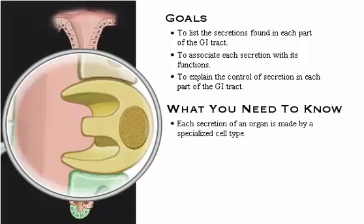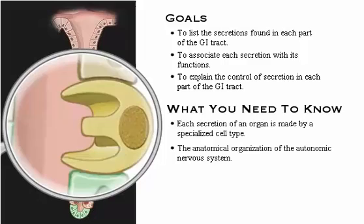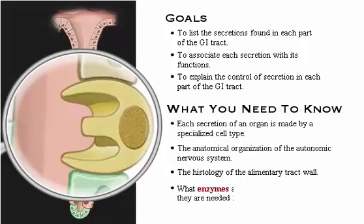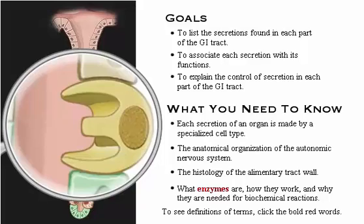Here's what you need to know: each secretion of an organ is made by a specialized cell type; the anatomical organization of the autonomic nervous system; the histology of the alimentary tract wall; what enzymes are, how they work, and why they are needed for biochemical reactions. To see definitions of terms, click the bold red words.